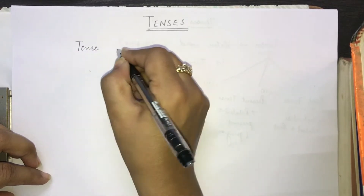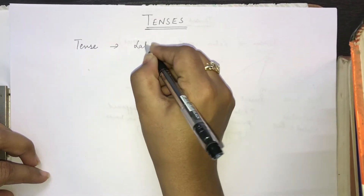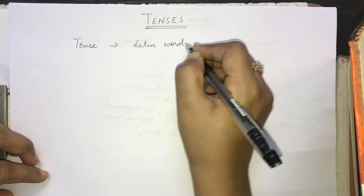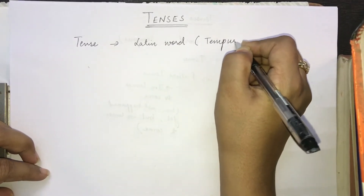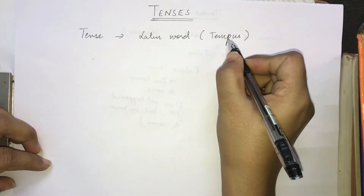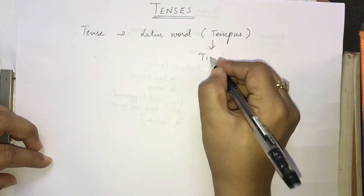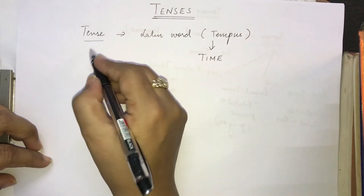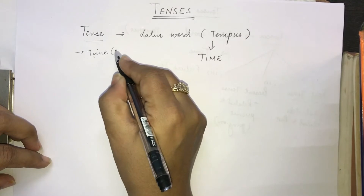Tense is actually a Latin word — tempus. It has come from this Latin word tempus, which means time. So tenses, something which depicts time, is a tense.